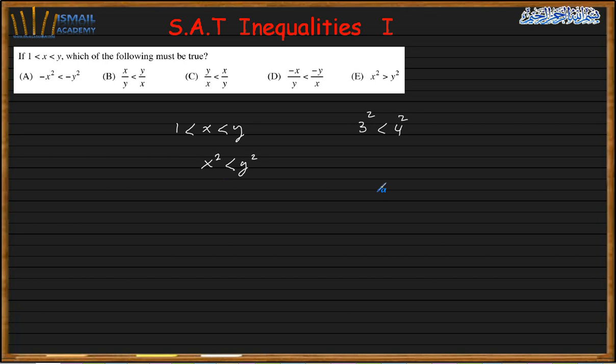What happens on this side, the sign switch. I will have minus x squared, greater than minus y squared, which means that the first we have.